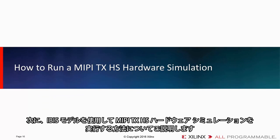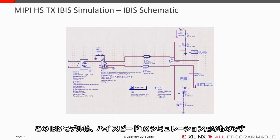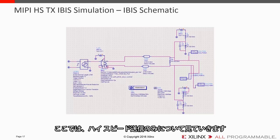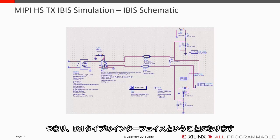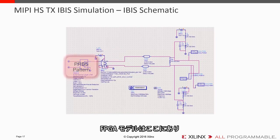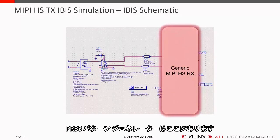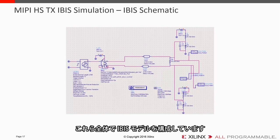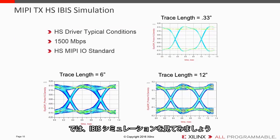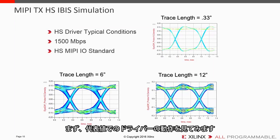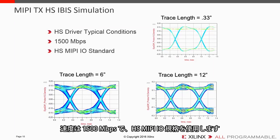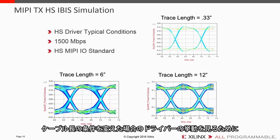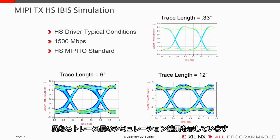Let's look at how to run a MIPI TX high-speed hardware simulation using an IBIS model. Here's the IBIS model for the high-speed TX simulation — we're going to simulate only HS in this case for a transmit, like a DSI type of interface. The model includes the FPGA model, a PRBS pattern generator, a generic MIPI HS receive termination, and a generic PCB transmission line. Looking at the driver under typical conditions at 1500 megabits per second using the MIPI I/O standard, you can see the different trace lengths used to show the driver under different cable length conditions.